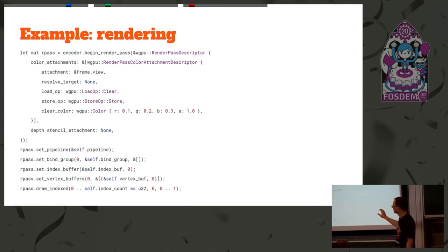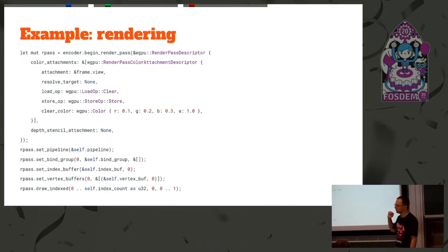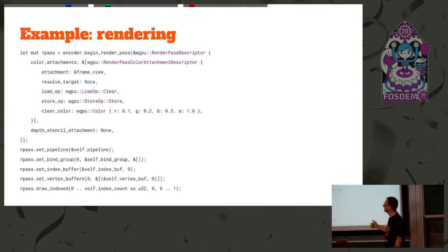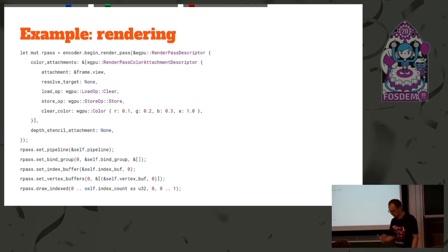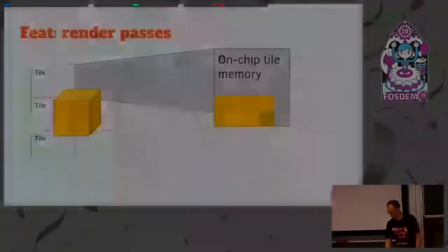The beauty of this setup is that by the time we call draw indexed, all the state it depends on is already set. Draw indexed is blazingly fast — there's nothing going on other than maybe some vertex buffer validation. You are supposed to be able to issue tens of thousands of draw calls in big, fat render passes. This is the goal that would allow us to produce those shiny pictures.